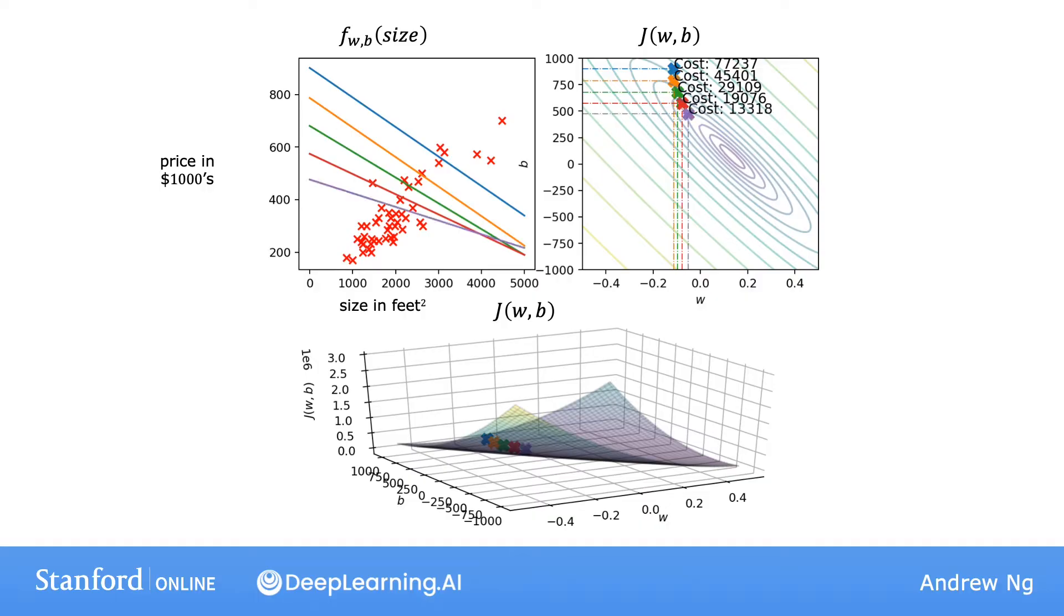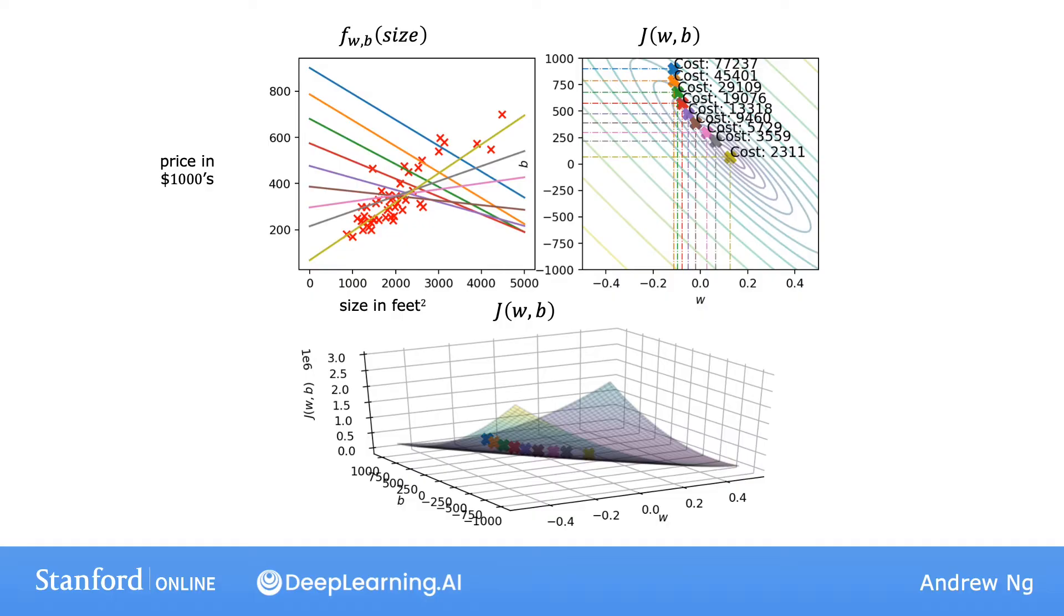As you take more steps, the cost is decreasing at each update. The parameters w and b are following this trajectory. If you look on the left, you get this corresponding straight line fit that fits the data better and better until we've reached the global minimum. The global minimum corresponds to this straight line fit, which is a relatively good fit to the data. That's gradient descent.